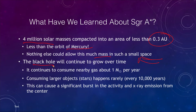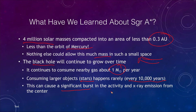Sagittarius A* is 4 million solar masses compacted down to an area of less than 0.3 astronomical units — that means 4 million suns within the orbit of Mercury. This black hole will continue to grow over time, absorbing gas at the rate of about one solar mass per year. It will also consume larger objects like stars and gas clouds, which happens more rarely — maybe once every 10,000 years. When this happens, we get a significant burst in activity and increased x-ray emissions from the center of our galaxy.